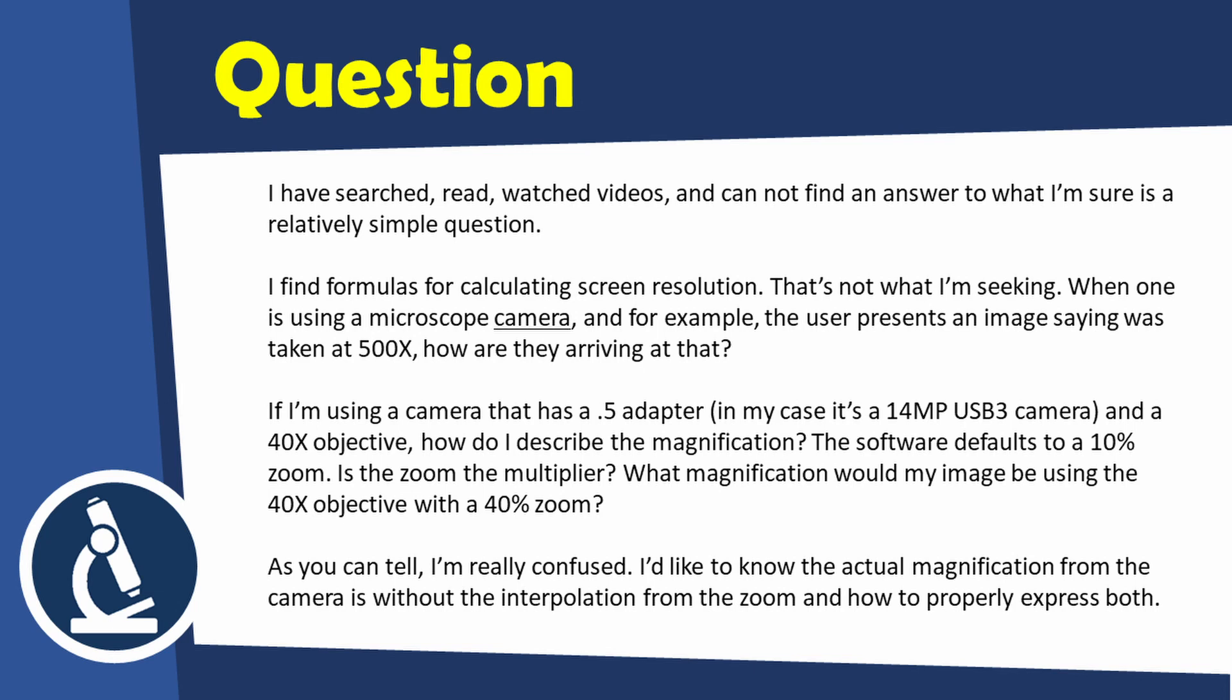If I'm using a camera that has a 0.5 adapter - in my case it's a 14 megapixel USB 3 camera and a 40 times objective - how do I describe the magnification? The software defaults to a 10% zoom. Is the zoom the multiplier? What magnification would my image be using a 40 times objective with 40% zoom? As you can tell, I'm totally confused. I'd like to know the actual magnification from the camera without the interpolation from the zoom and how to properly express both.